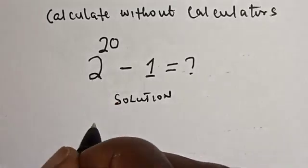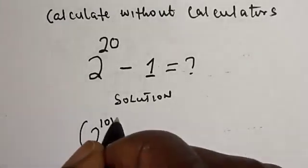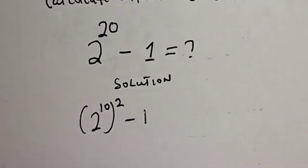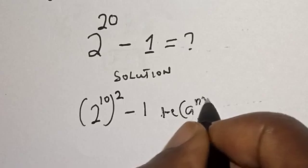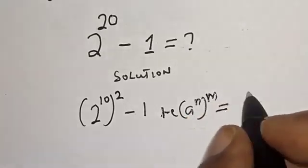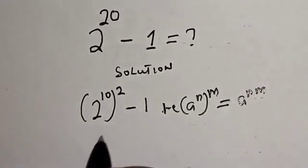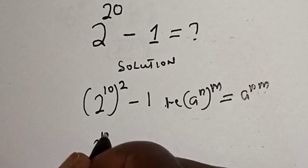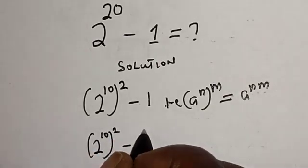2 raised to power 20 can be written as 2 raised to power 10, raised to power 2, minus 1. If you have a raised to power n raised to power m, this equals a raised to power n times m. This becomes 2 raised to power 10 squared minus 1 squared.